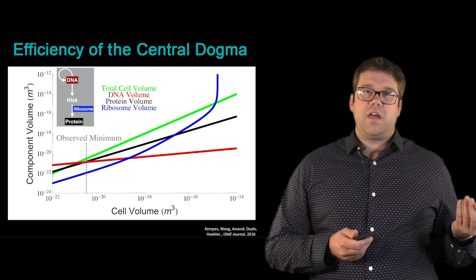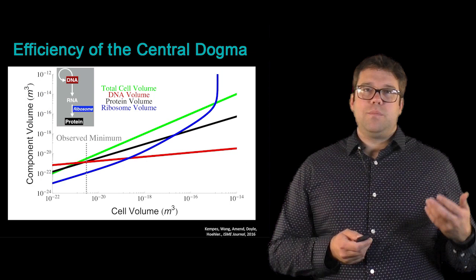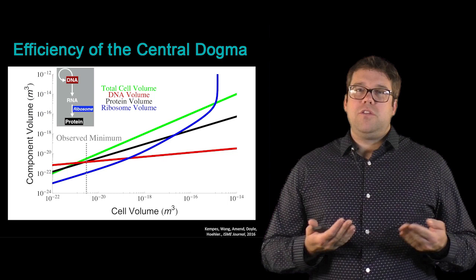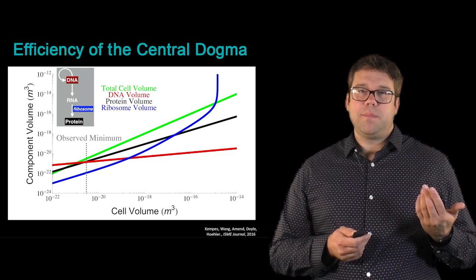Looking at this plot as a whole, what we see is that at the small end of life, you tend to be running out of space for two of the components of the central dogma, namely proteins and the DNA storage information. At the large end, you're also running out of space, this time for ribosomes. We think that simply looking at the central dogma, you can bound the smallest and largest possibilities for bacteria.